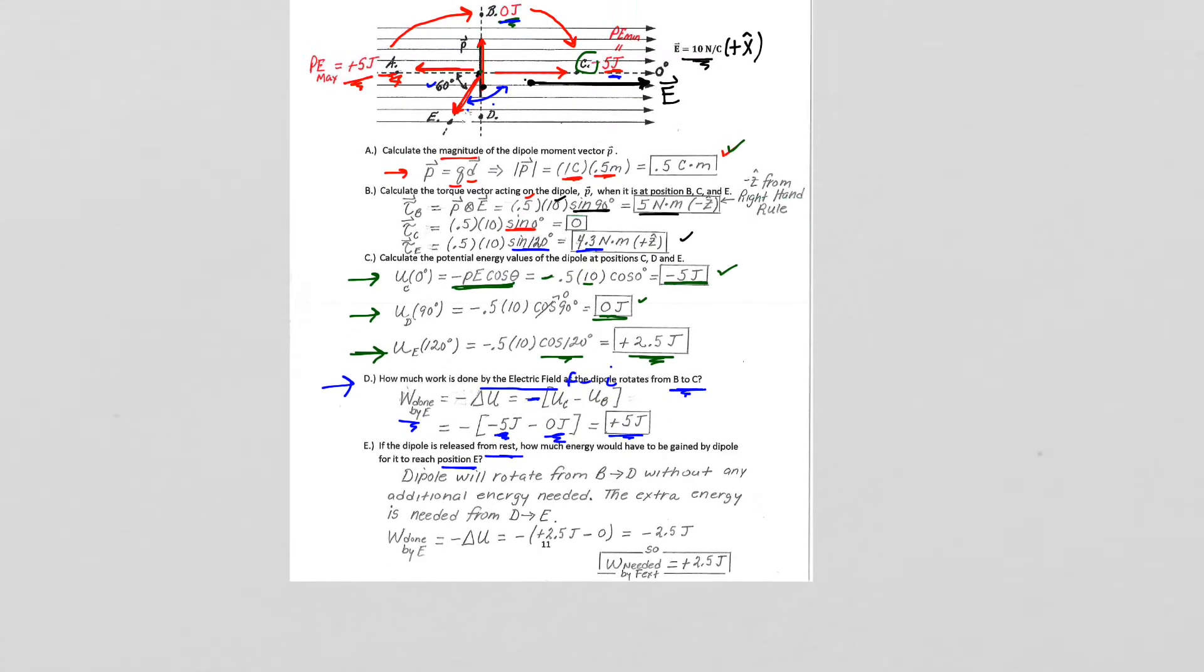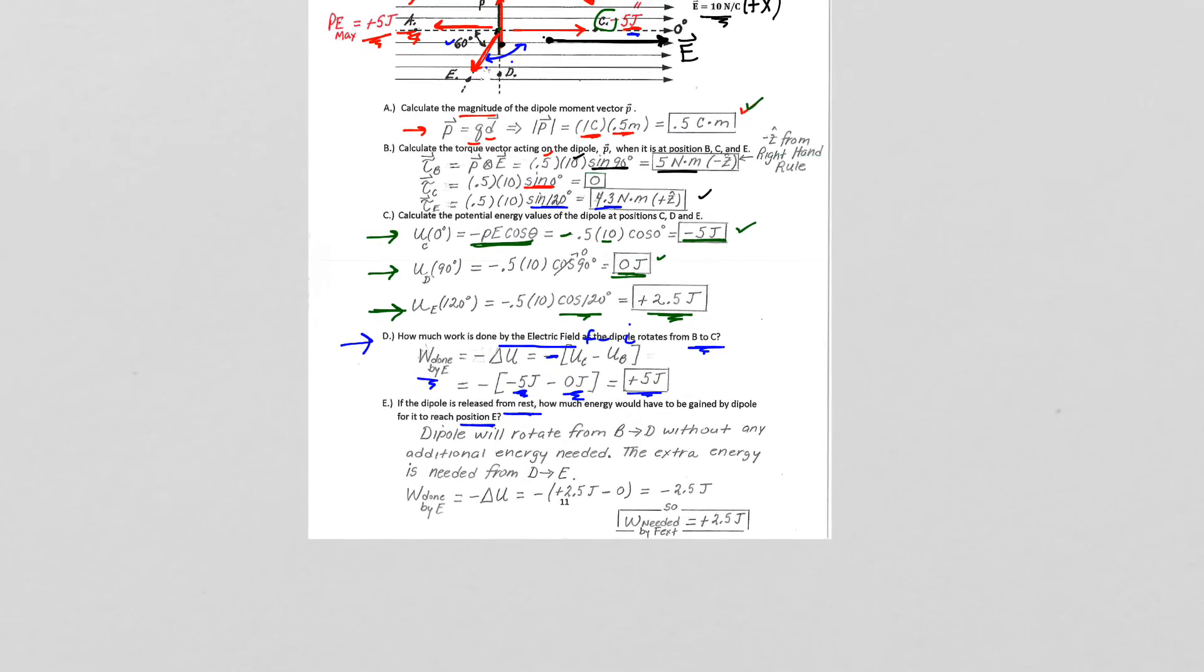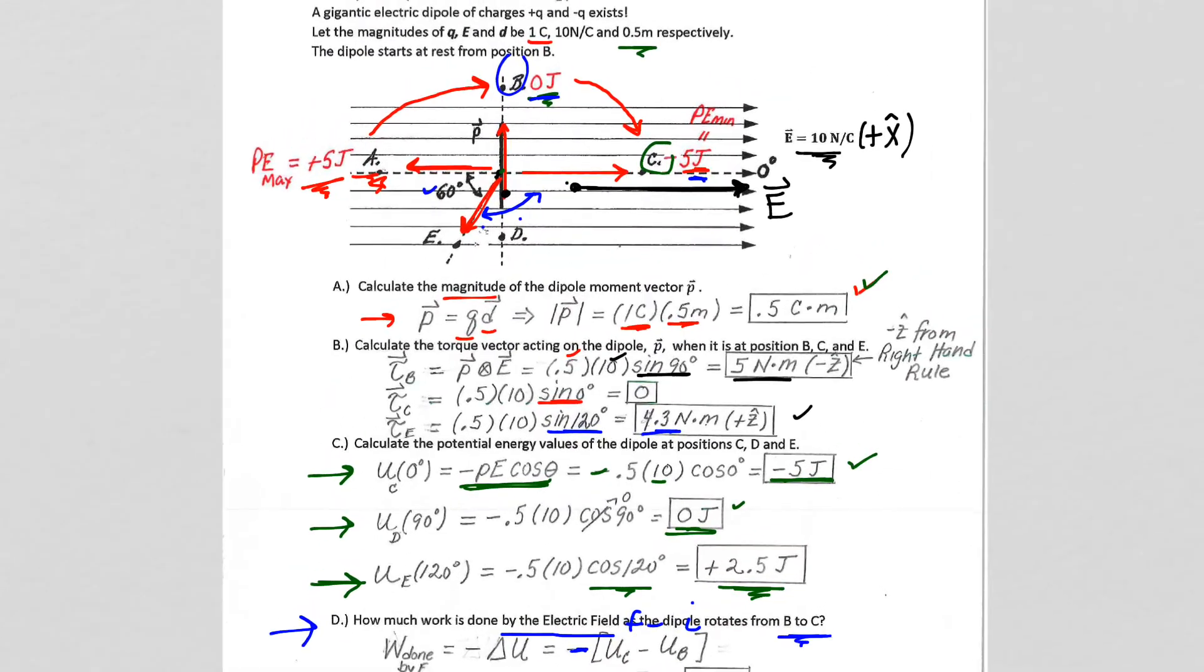Here we are asked to look at the dipole rotating from B to position E. So if the dipole is released from rest at its initial position, so if it's released from rest up here at position B, how much energy would have to be gained by the dipole to reach position E? Well, what we need to look at is what will happen naturally versus what would we have to do to force it to get there.